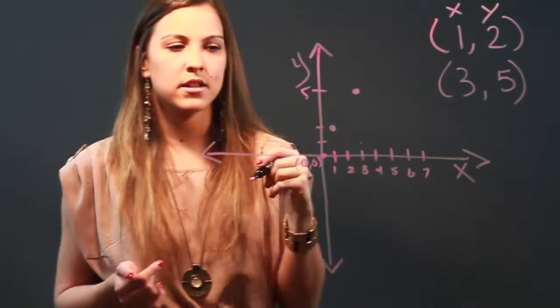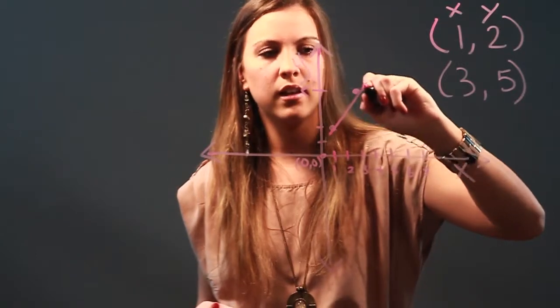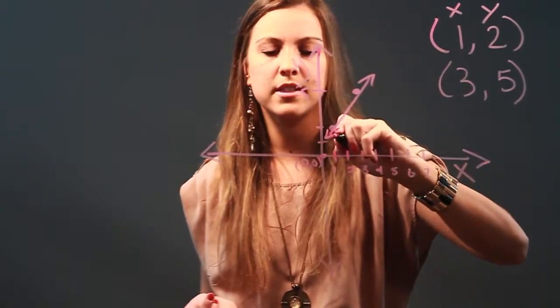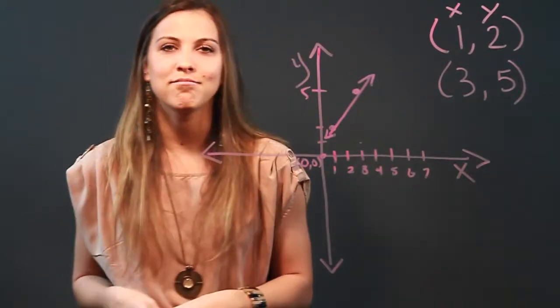Now that I have my two points, all I have to do is get a ruler and connect them with a straight line and I'm going to draw arrows on both sides showing that it goes on in both directions. And that is how you plot lines on a graph.